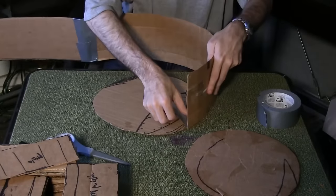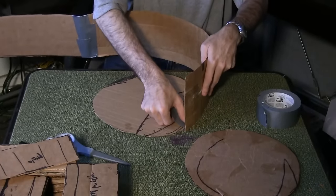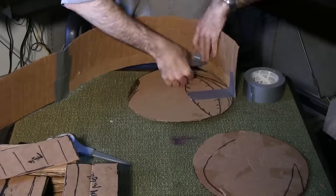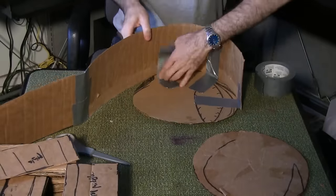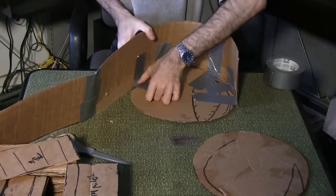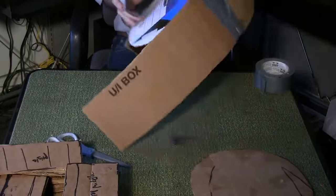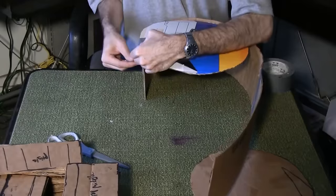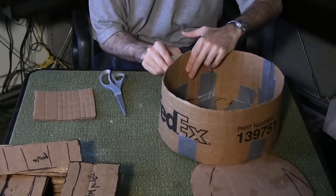Cut additional cardboard as needed to complete the circle and duct tape it together. Using the circles you just cut out, tape the perimeter piece to one of them on the inside all the way around. Flip it upside down and tape it around the outside as well. Cut away any excess and tape the perimeter circle together.